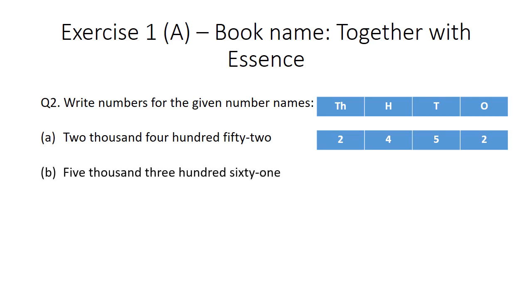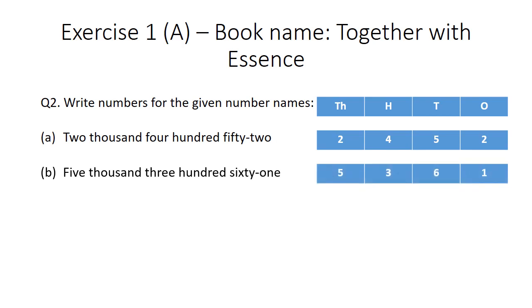Part B: 5,361. With 5,000 is written, so we will write 5 at the thousands place, 3 at the hundreds place. For 61, we write 6 at the tens place and 1 at the ones place.